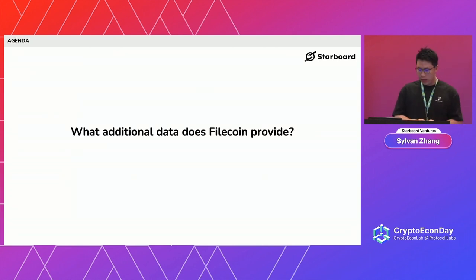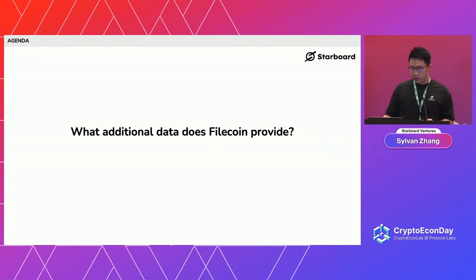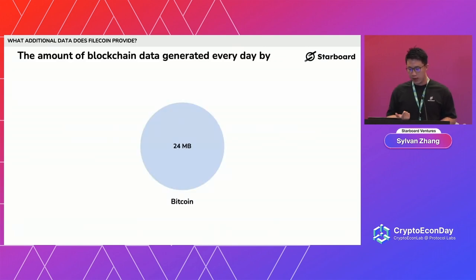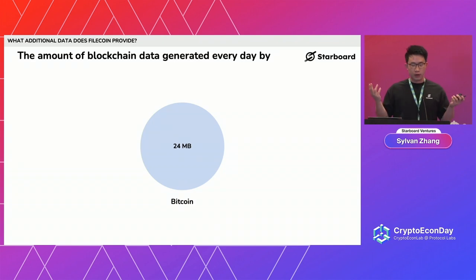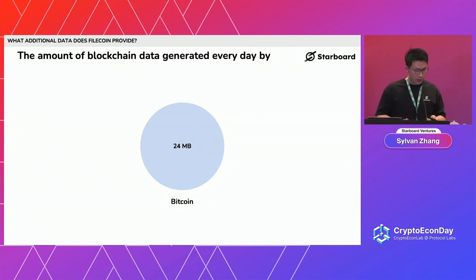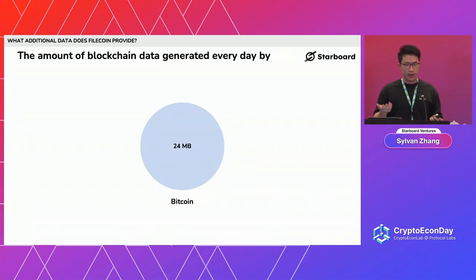The next question: if Filecoin is a service economy powered by token economics, what additional data does Filecoin provide? First, let's see how much network data Filecoin generates every day. For Bitcoin, it's about 24 megabytes of blockchain data every day. And how much data does Ethereum generate?